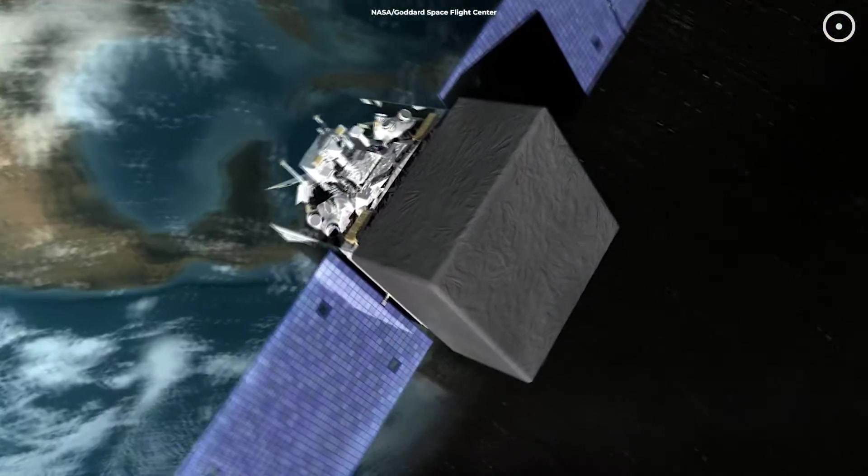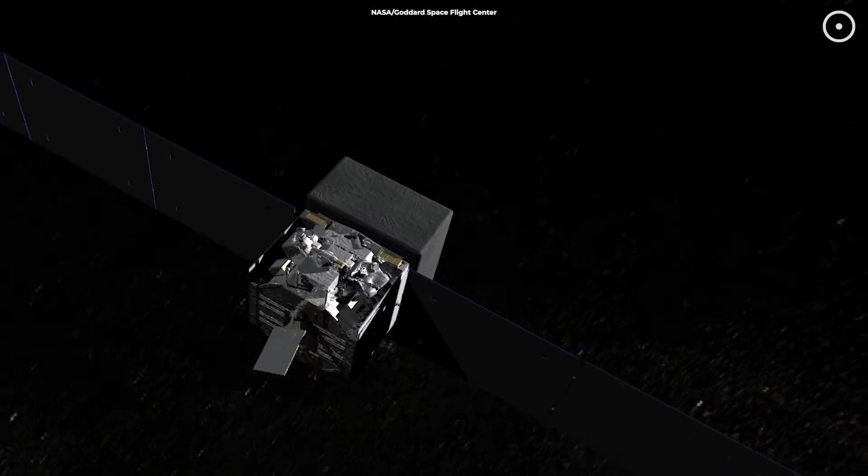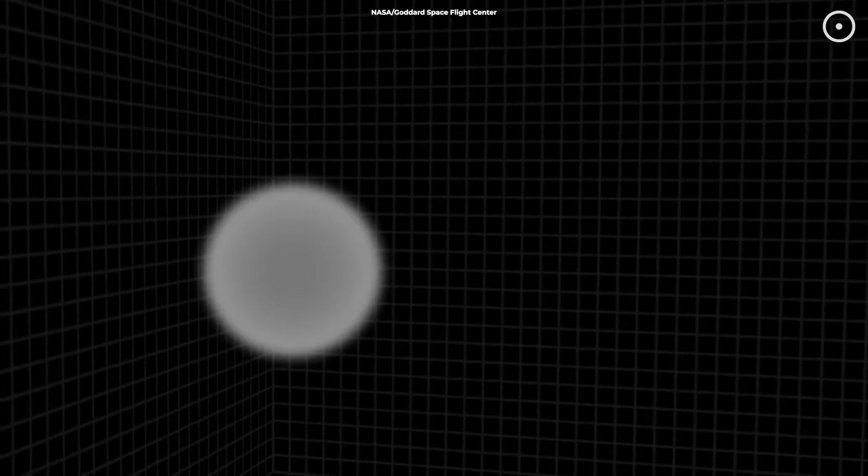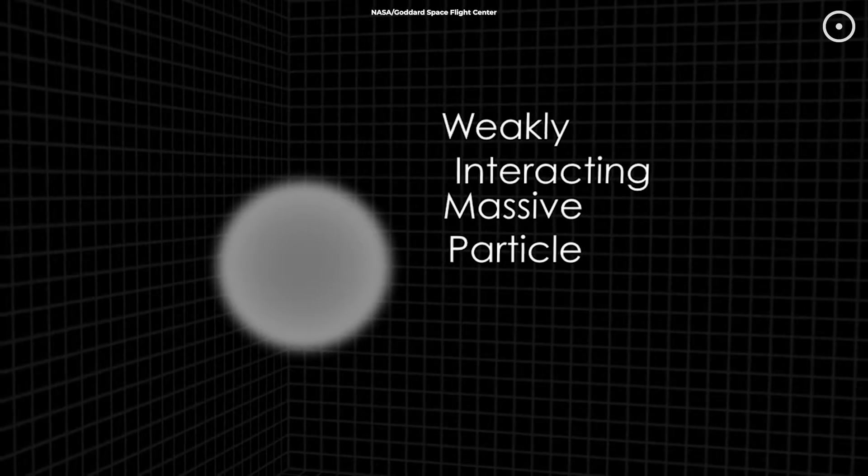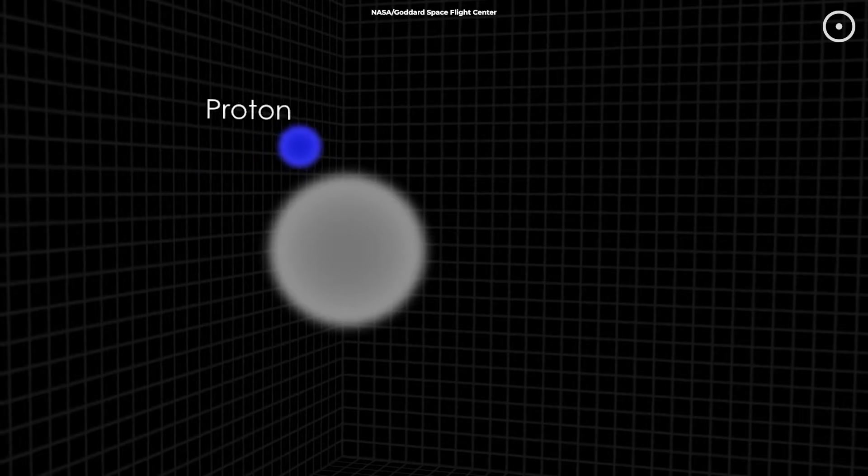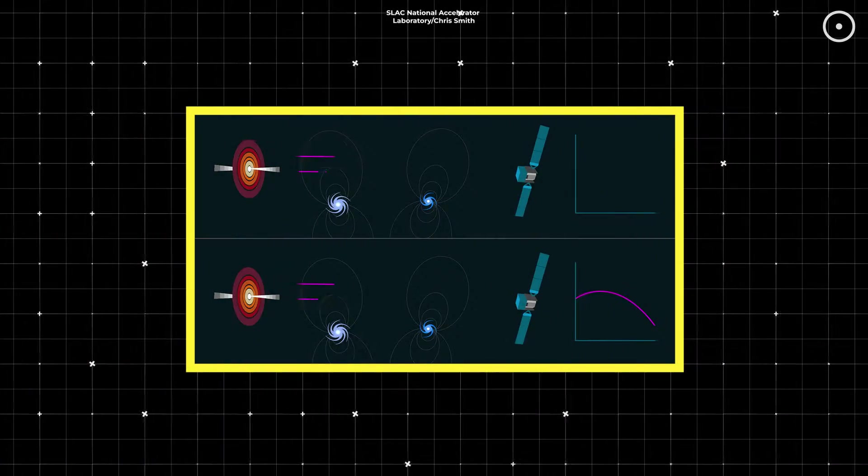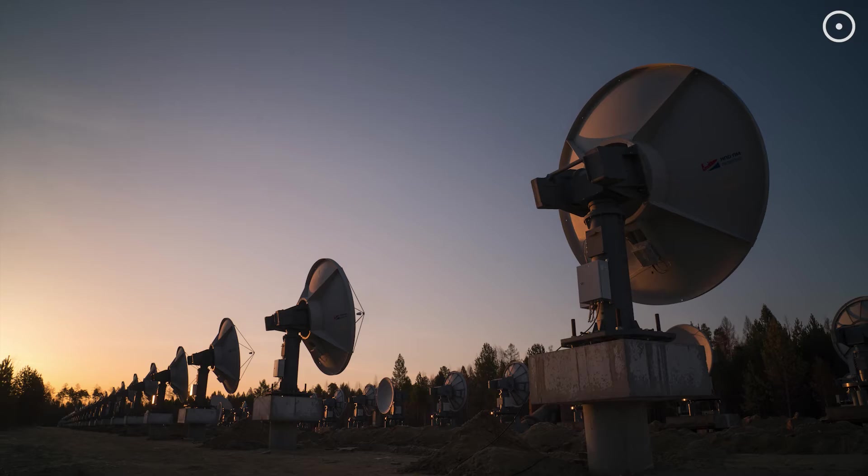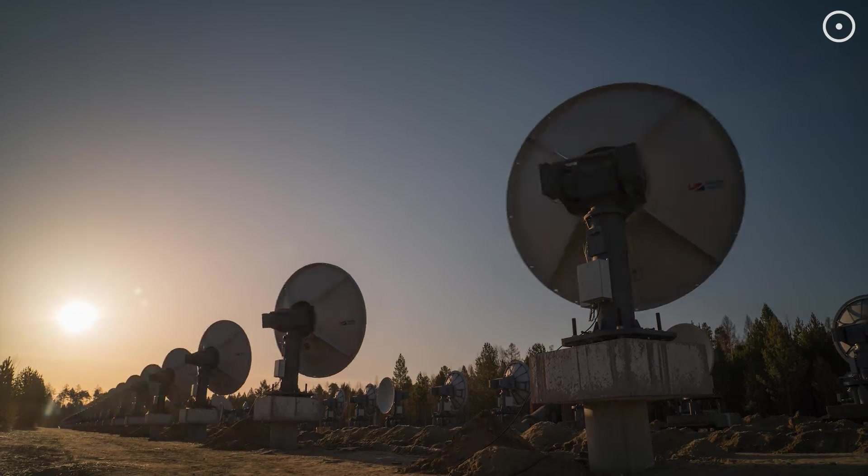So, we know dark matter is out there, but what exactly is it? One popular idea is that dark matter is made of WIMPs, or weakly interacting massive particles. These are particles that hardly interact with regular matter, making them incredibly hard to detect. Another theory suggests something called axions. These are super light particles, almost like ghostly particles, that can be everywhere but remain hidden. But how do we find something that doesn't want to be found?